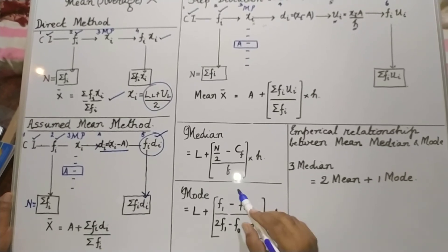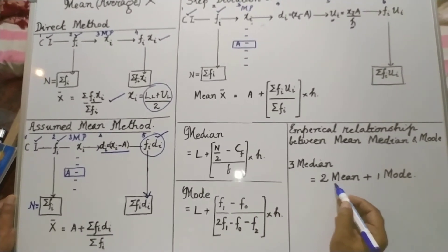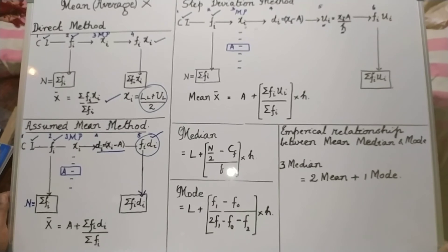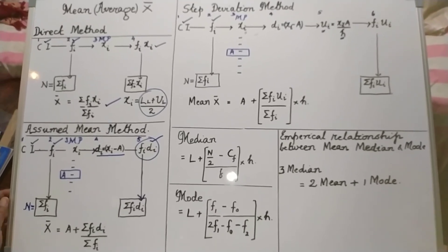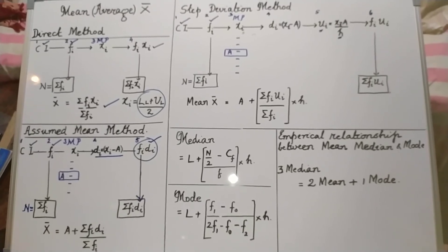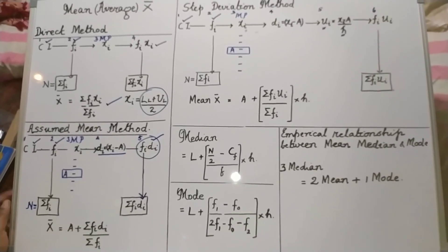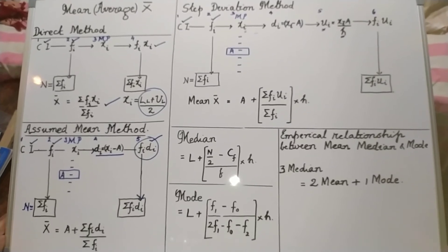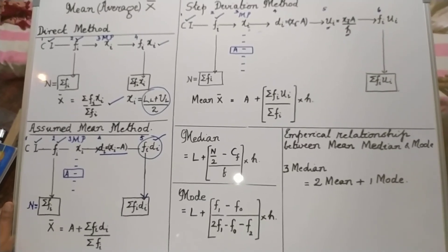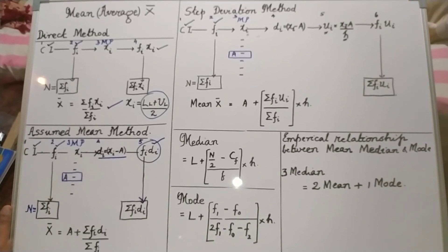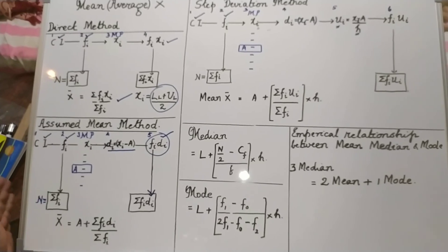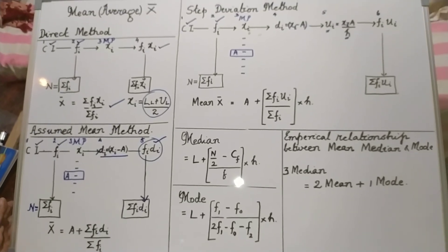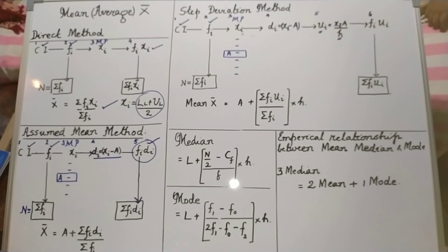The relationship between mean, median, and mode is: 3 median equals 2 mean plus 1 mode. Please remember you will have to practice consistently. If you do not revise what you learnt today within 24 hours, you would have forgotten 83% of what you learnt. The formula for being better is revising, repeating, rewriting, and recalling — done consistently.